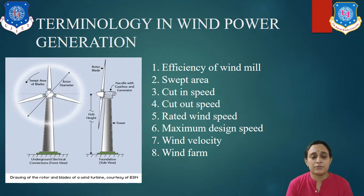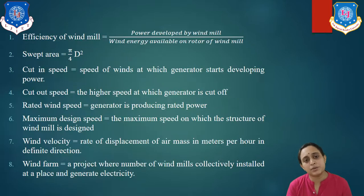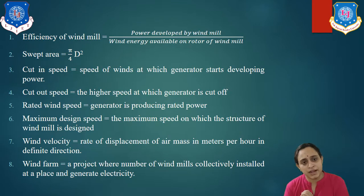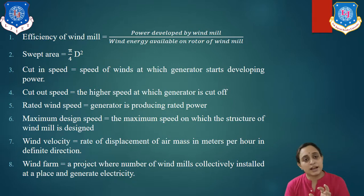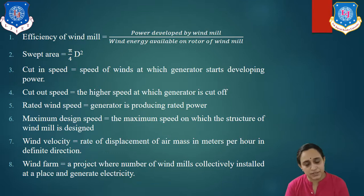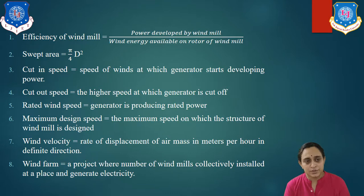Let us explain the efficiency of a windmill. The efficiency of a windmill is basically the ratio of power developed by the windmill to the wind energy available at the rotor. It means we find the proportionate value — how much power is generated relative to how much energy is available. Generally, the efficiency is between 30 to 35 percent.